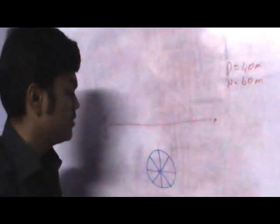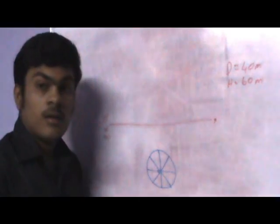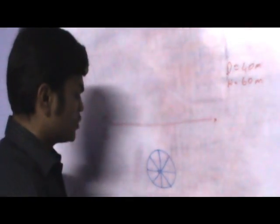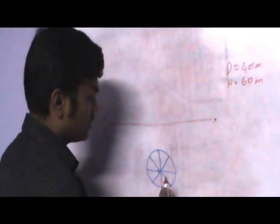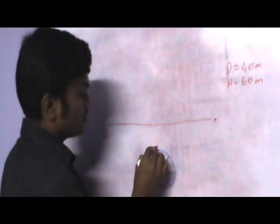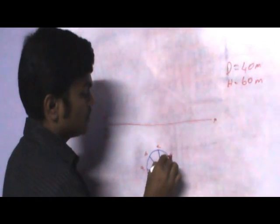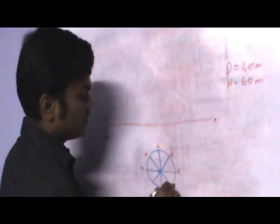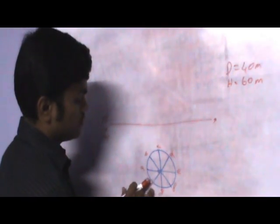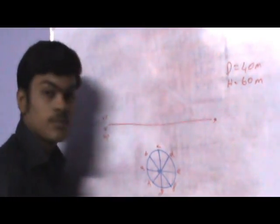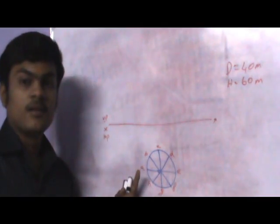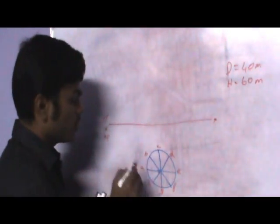I am dividing the circle into 8 or 9 equal parts and I am going to project this cylinder. Let me give names for the points: A, B, C, D, E, F, G, and H. This is the top face of the cylinder.